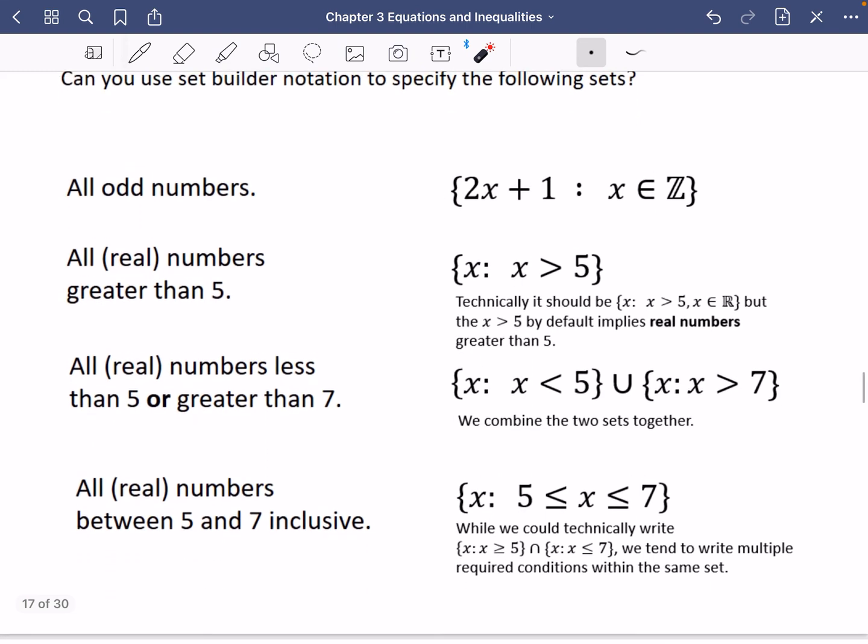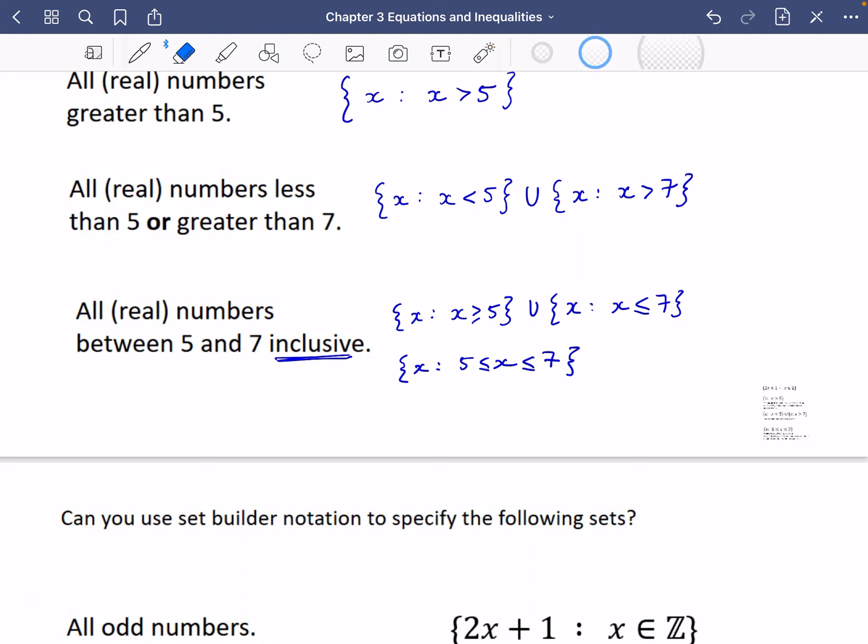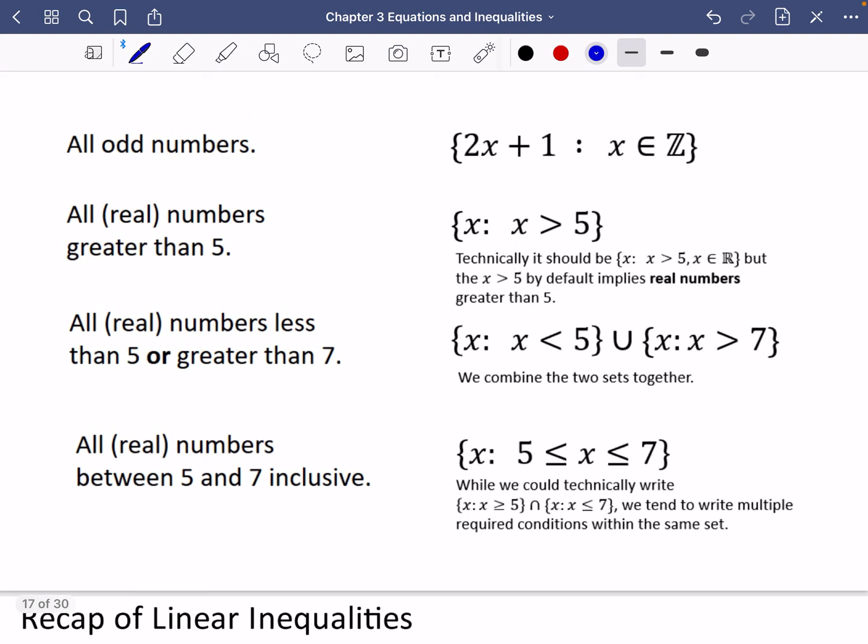So just say at the beginning what the variable is, and then state afterwards what the inequality is. So these were the answers I had here. We've got all of the odd numbers with x the integers, or the real numbers greater than five. So technically you should say this, but because we're talking about this by default, it implies that it's just the real numbers. We should have said it is both of these things true, because it's an and, it should have been that and that. So although we could have written it, we tend to write multiple required conditions within the same set.